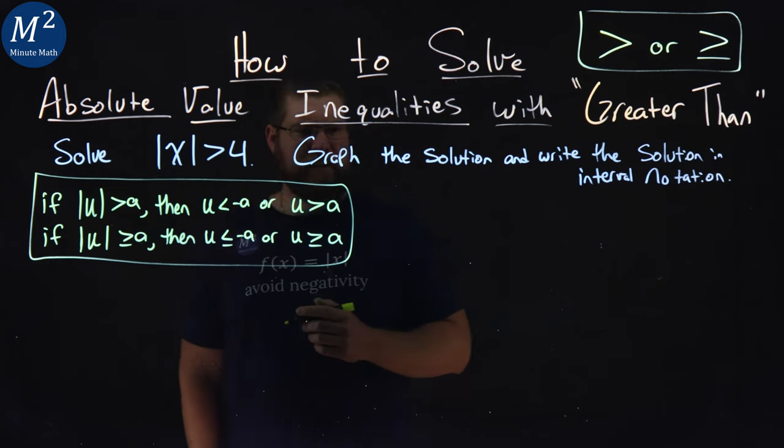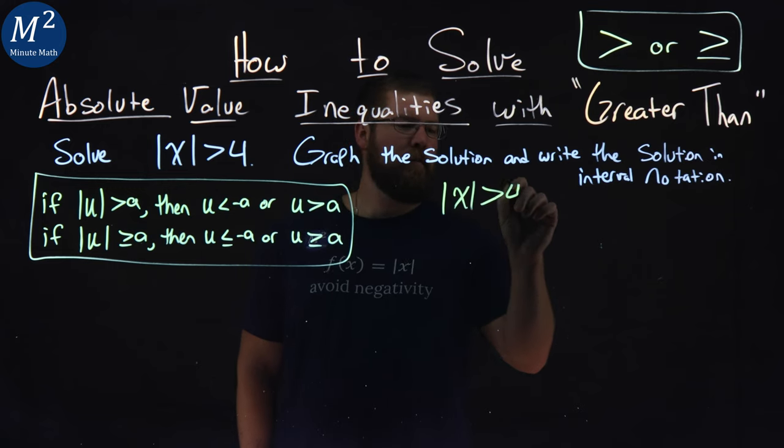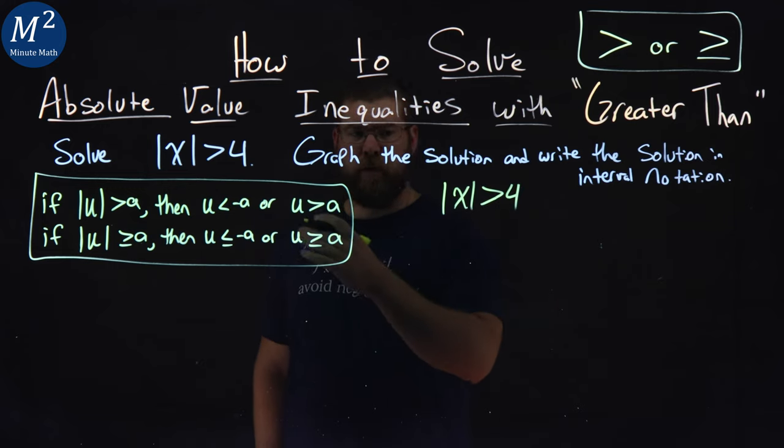Let's see our first example here. We have absolute value of x is greater than 4. Let's apply our rule.